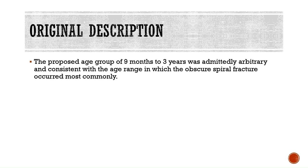The proposed age group of 9 months to 3 years was admittedly arbitrary and consistent with the age range in which the obscure spiral fracture occurred most commonly.